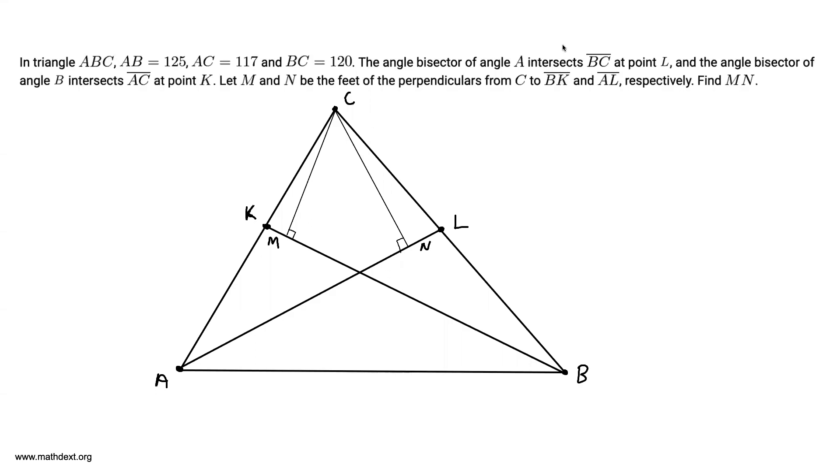In triangle ABC, AB equals 125, AC equals 117, and BC equals 120. The angle bisector of angle A intersects BC at point L, and the angle bisector of angle B intersects AC at point K. Let M and N be the feet of the perpendiculars from C to BK and AL respectively. Find MN.